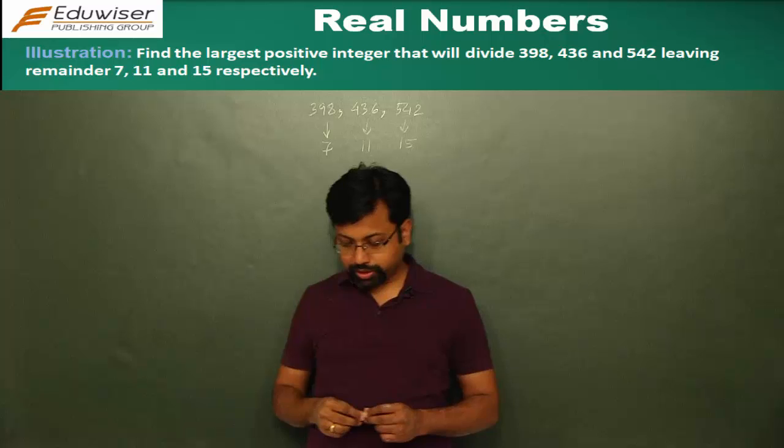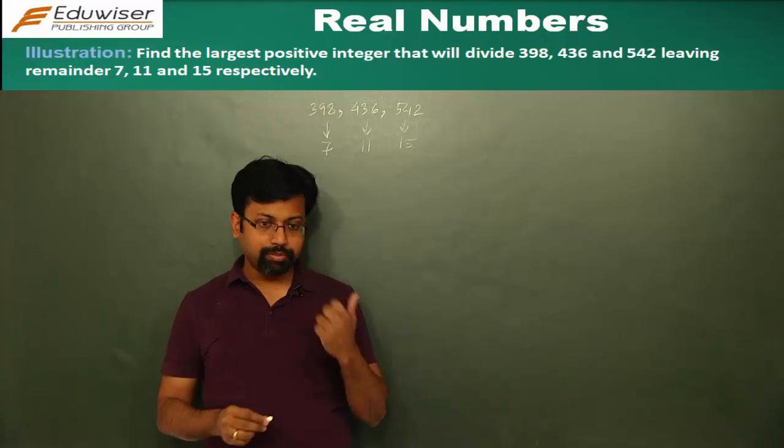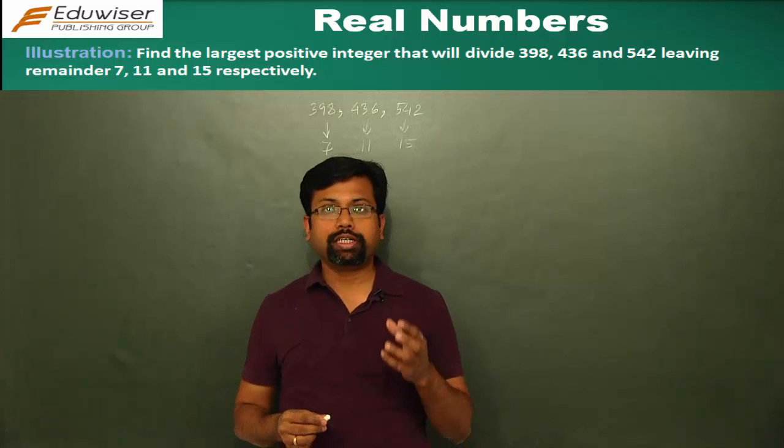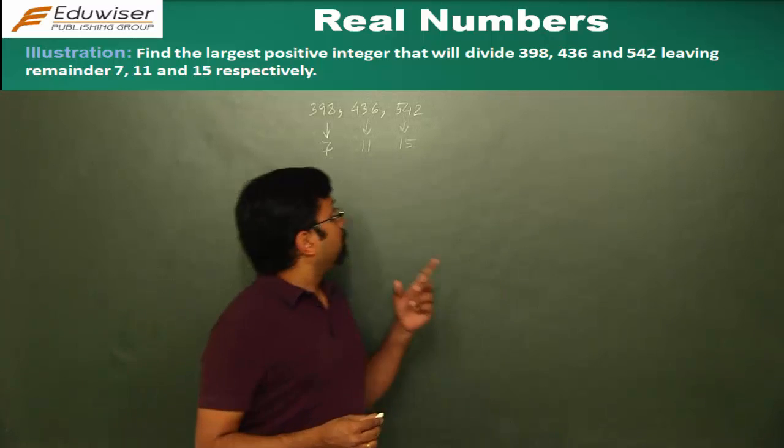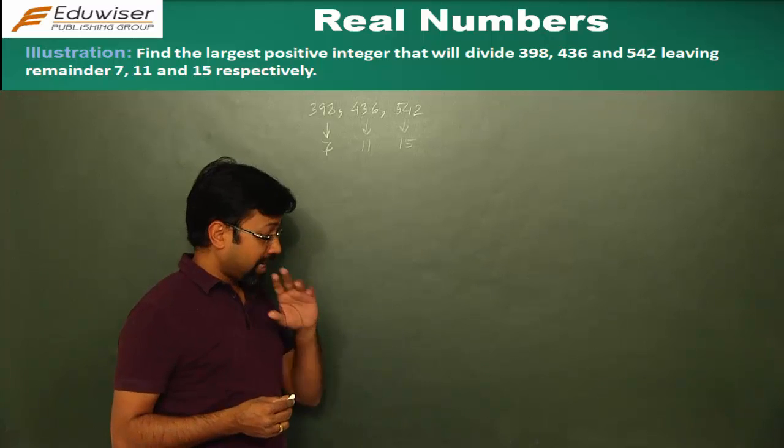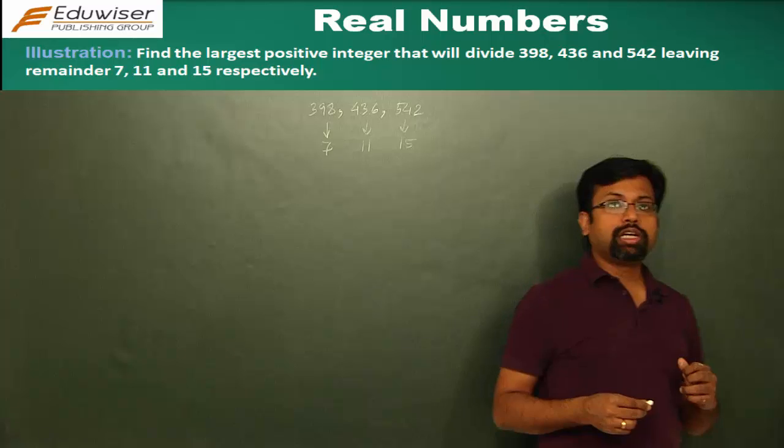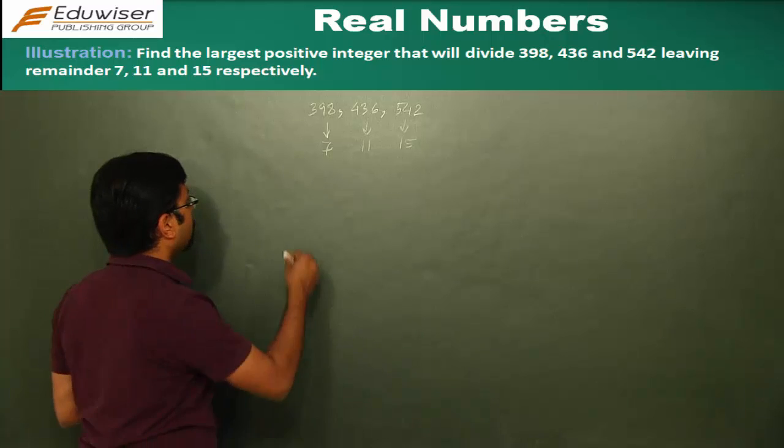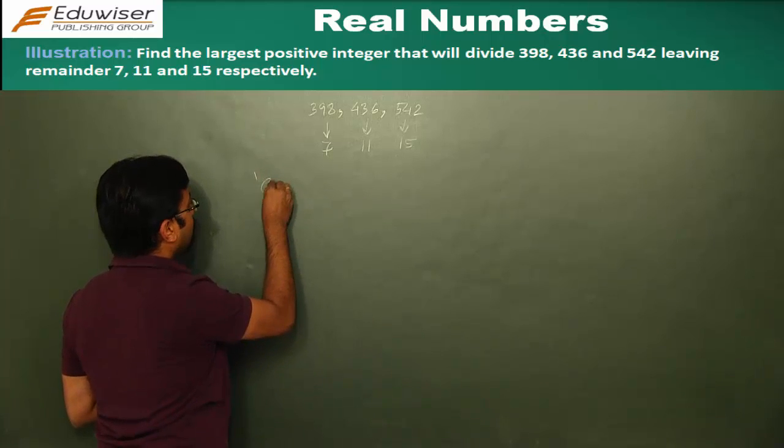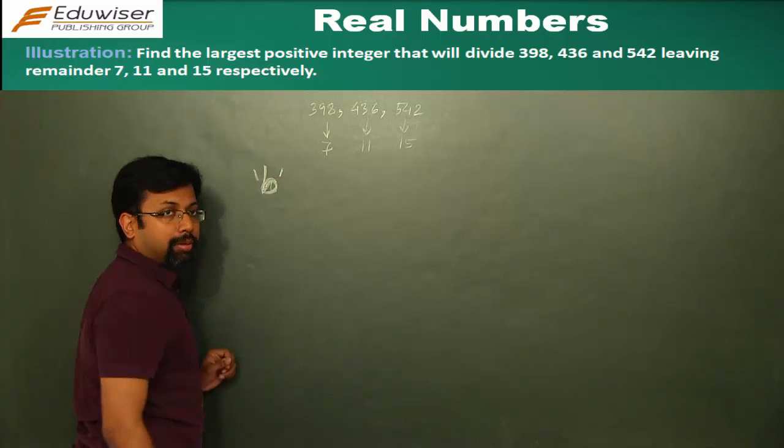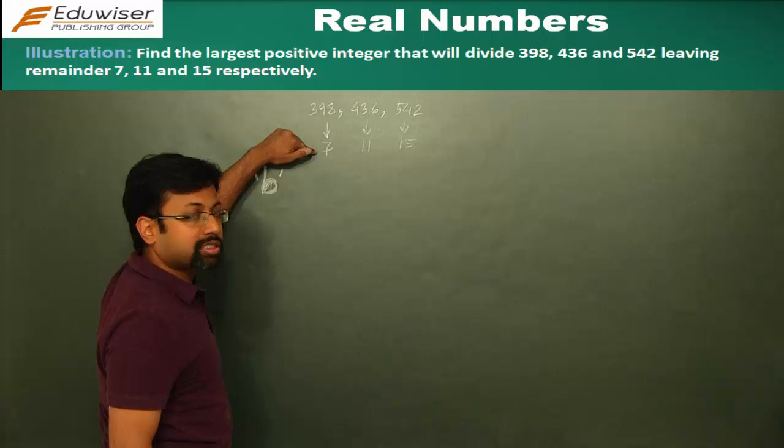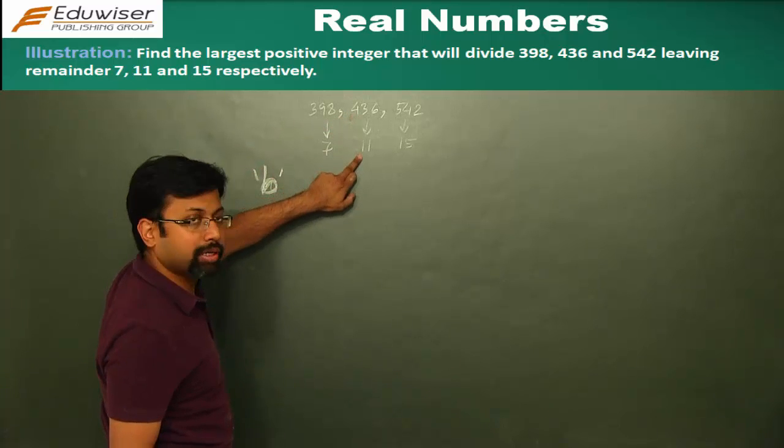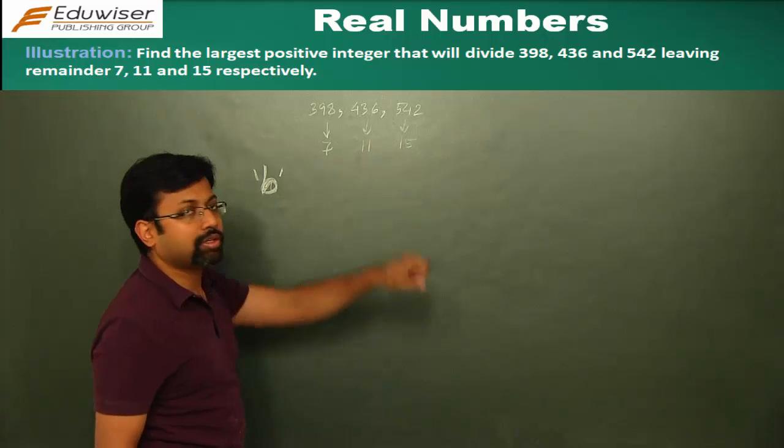So now in this next question, this again involves the application of HCF and LCM. It says we have to find the largest positive integer that will divide the given 3 numbers 398, 436 and 542, and they would leave the remainders 7, 11 and 15 respectively in the 3 cases. So let's see how we do it. Let that number be A. Let B be that number which when divides 398 leaves a remainder 7. When it divides 436, it leaves a remainder 11 and when it divides 542, it leaves a remainder 15.